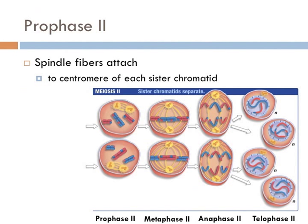Throughout meiosis I, the sister chromatids remain attached. So at the beginning of meiosis II, each chromosome consists of two sister chromatids. And because only one of each homologous pair is present, the cell is haploid. Meiosis II begins with prophase II, during which the spindle apparatus forms in both daughter cells and the microtubules attach back to the chromosomes.